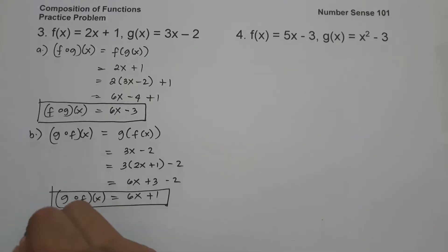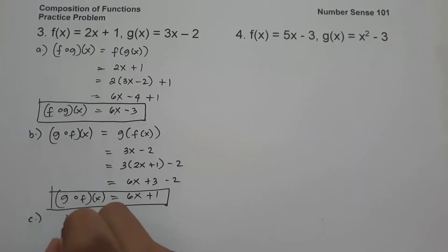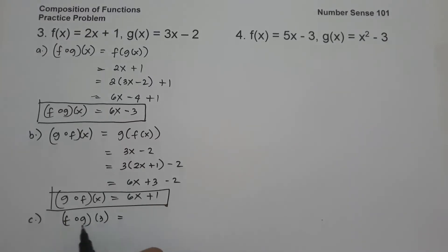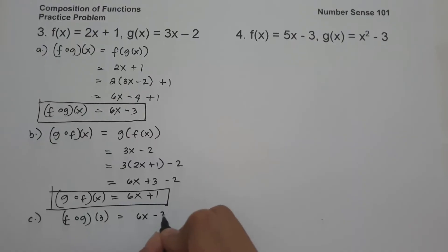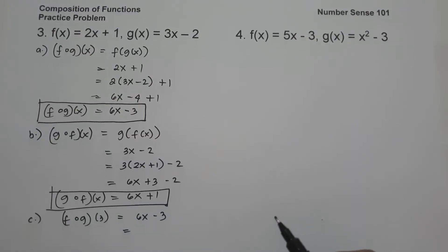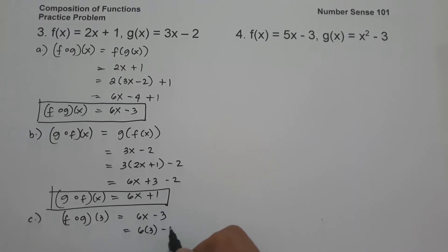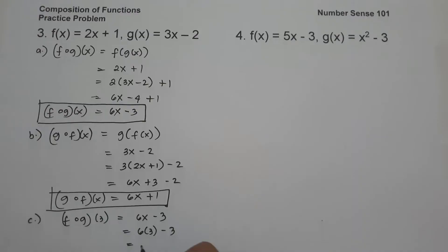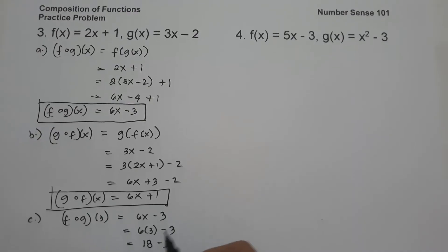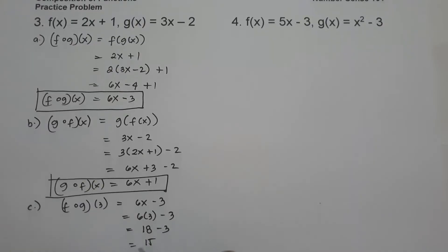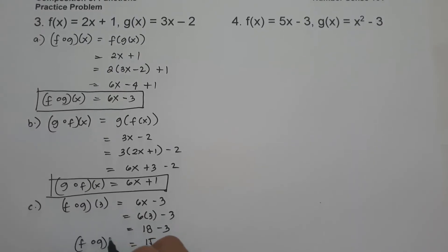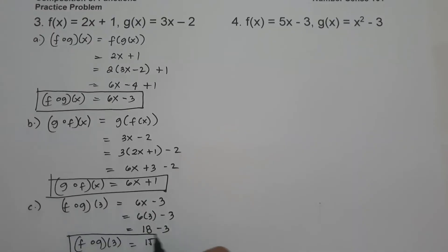On letter c, let us have f circle of g of 3. Since f circle of g of x is 6x minus 3, all we have to do is substitute x equals 3. So this will be 6 times 3 minus 3. 6 multiplied by 3 is 18, minus 3, and that is 15. And this is the value of f circle of g of 3, and this will be our answer.